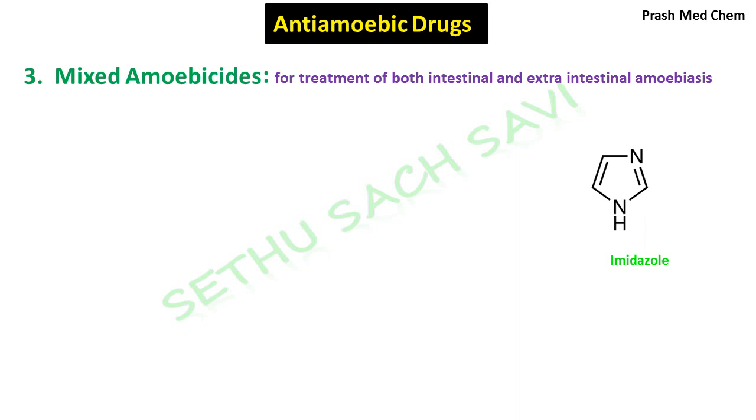The numbering of imidazole starts from the bottom nitrogen atom and it goes on like this: 1, 2, 3, 4, and 5.